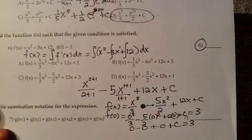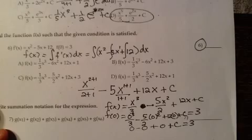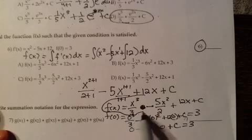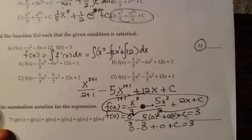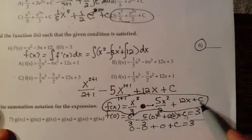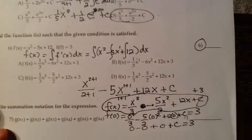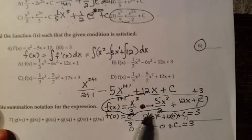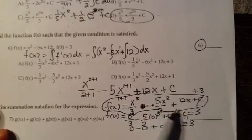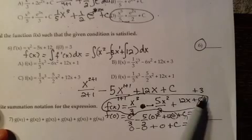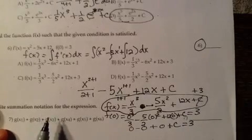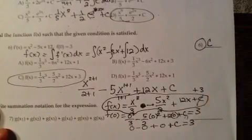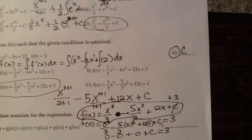Based on the initial condition, we know that c is 3. We already found our function, and now we have this new information that the c number is a positive 3. So in our answer choices, we're looking for one-third x cubed minus five-halves x squared plus 12x plus 3 at the end. And that is answer choice C.